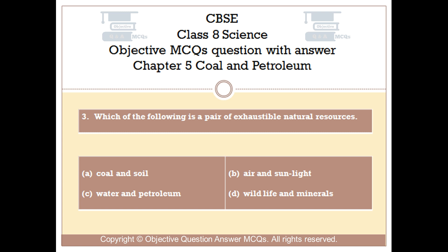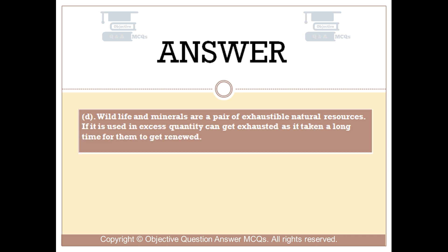The right answer is Option D. Wildlife and Minerals are a pair of exhaustible natural resources. If used in excess quantity, they can get exhausted, as it takes a long time for them to get renewed.